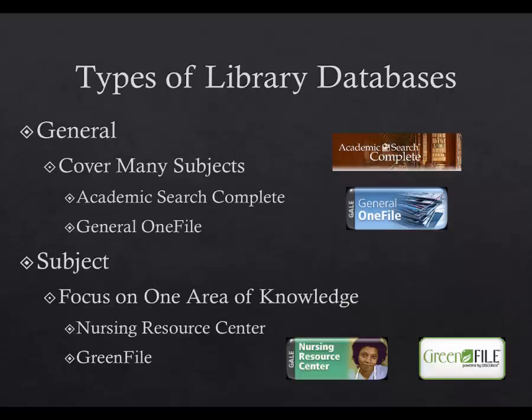There are two main types of databases. General databases cover many subjects. Examples include Academic Search Complete and General OneFile. The other type is a subject database, which focuses on one area of knowledge. Examples include Nursing Resource Center and GreenFile. Your topic and research needs can guide you towards using either general or subject databases.